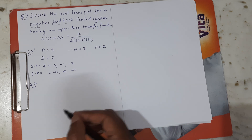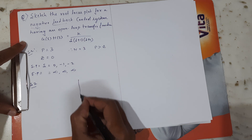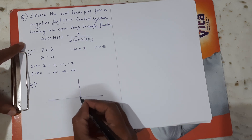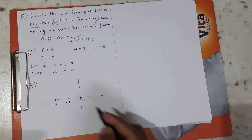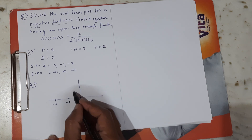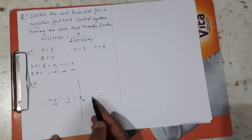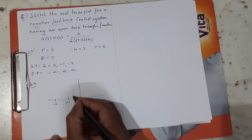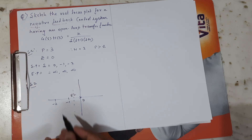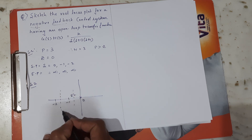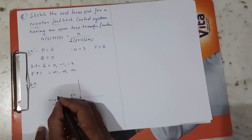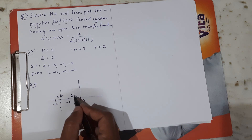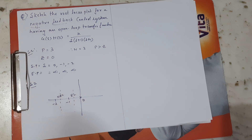Step 2: find the root locus possible on the real axis. Drawing the pole-zero plot, the roots are s = 0, -1, and -2. Considering the segment between -1 and 0: there is one root to the right side, which is an odd number, so root locus is possible between 0 and -1. For the segment between -1 and -2, there are two roots to the right — even number — so no root locus there.